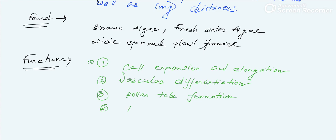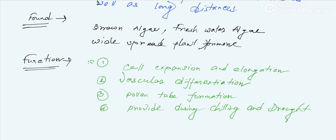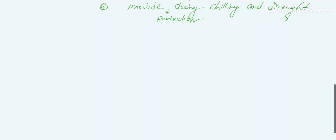Another major and important role that this hormone plays is providing protection to the plant during chilling and drought conditions. This is one of the most important roles played by brassinosteroid. So to summarize the functions: cell expansion, cell elongation, vascular differentiation, pollen tube formation, and protection from chilling and drought.